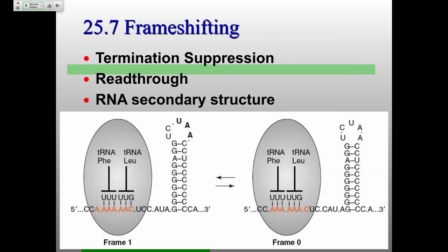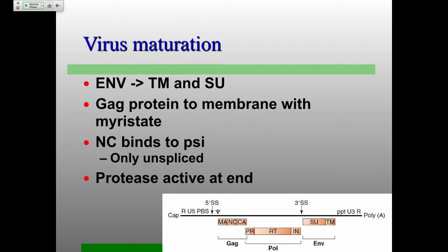How do we get frame shifting? There are two different ways in different retroviruses. In the case of HIV, it's an RNA secondary structure that causes the ribosome to slip a little bit and end up in a different open reading frame. You also have some retroviruses that just suppress termination — a stop codon that gets misread. The majority of the time you have the GAG proteins, and far fewer GAG-POL fusion proteins, which makes perfect sense since you don't need as many enzymes as structural proteins.